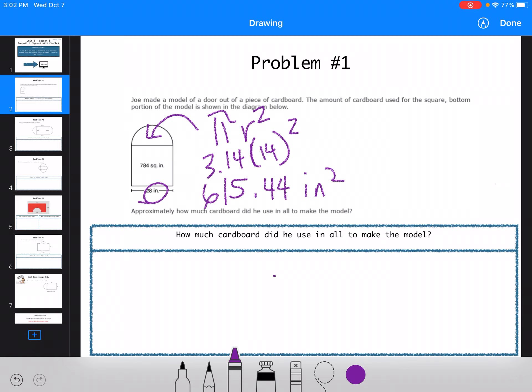The problem is that's a whole circle and I only want half the circle. So I still need to divide that by 2. And I get 307.72.